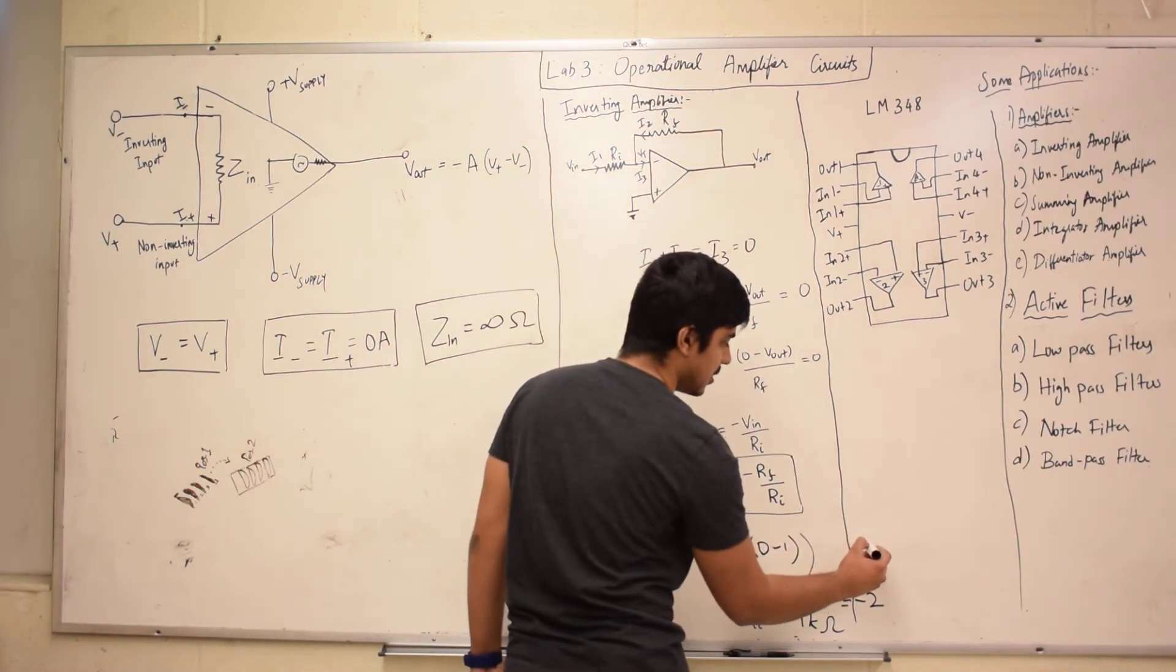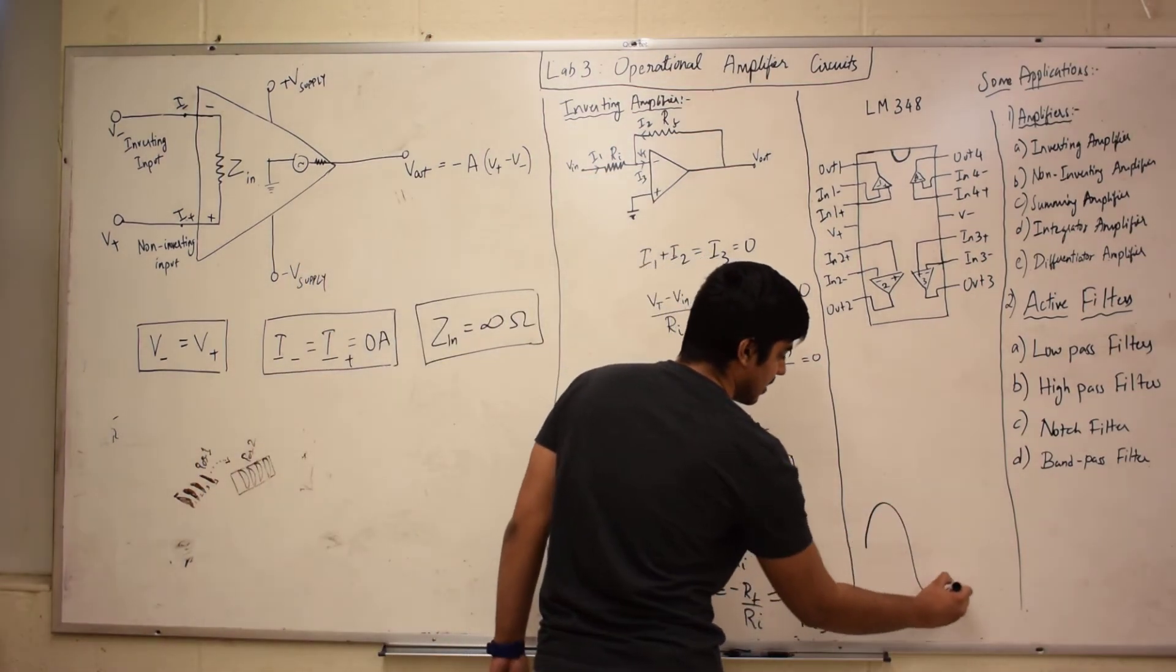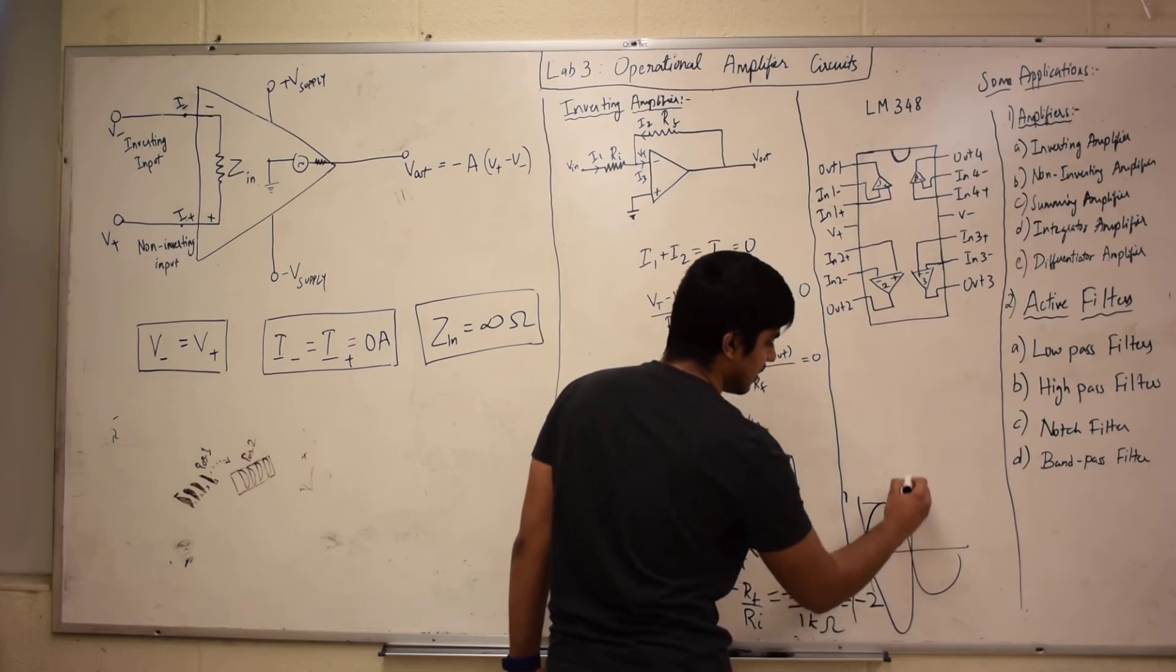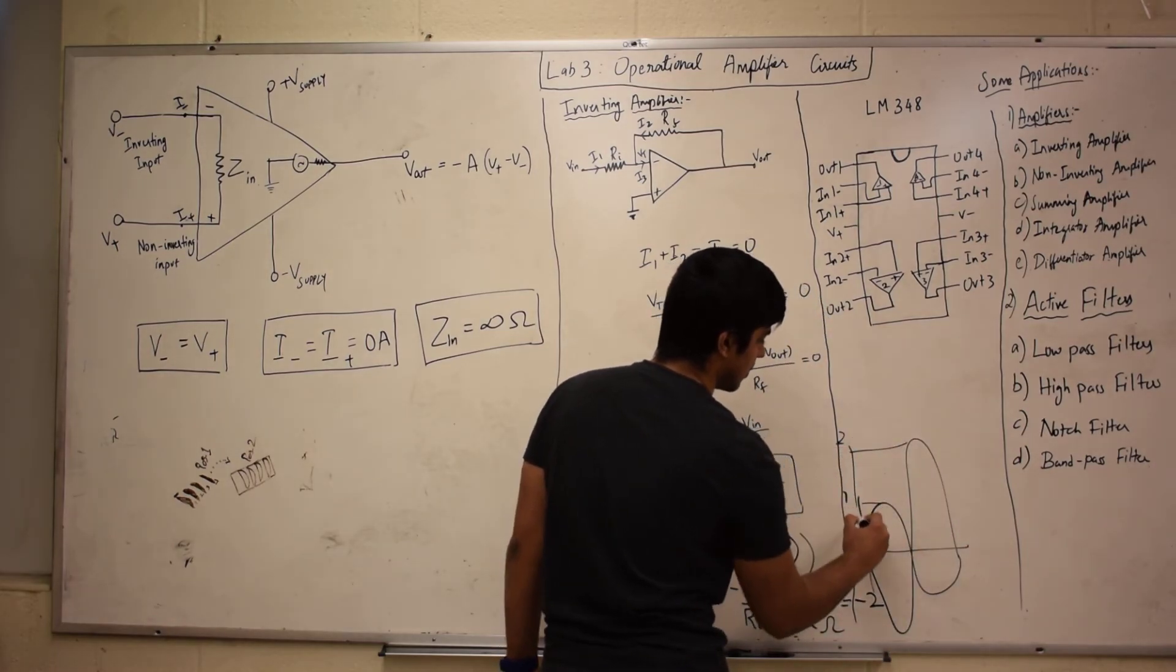So if you have an input of amplitude one, your output would be in the opposite direction with an amplitude of two.